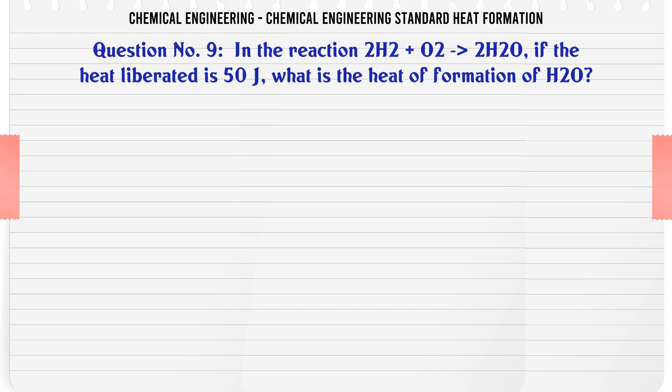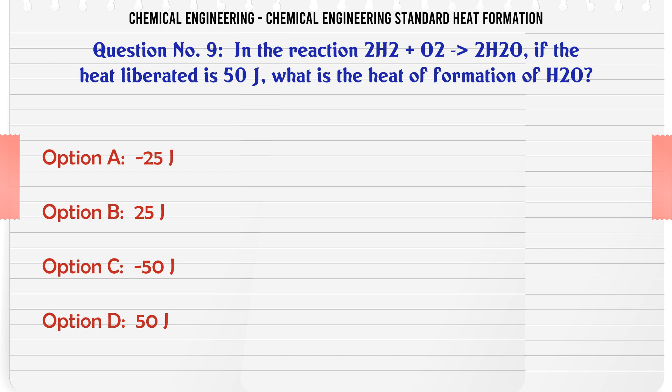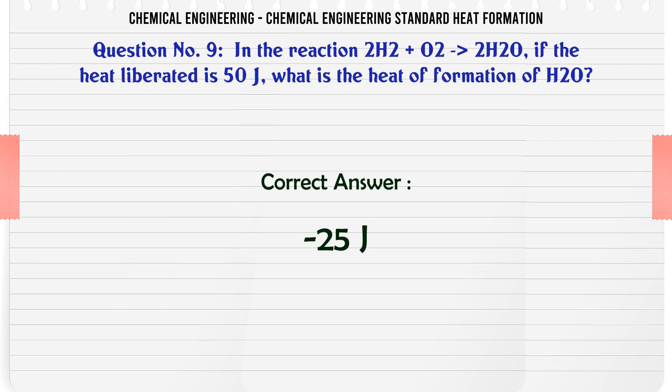In the reaction 2H₂O₂ → 2H₂O, if the heat liberated is 50J, what is the heat of formation of H₂O? A) 25J. B) -25J. C) 50J. D) -50J. The correct answer is -25J.